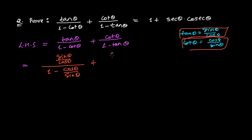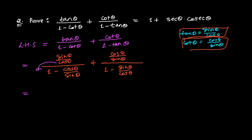Similarly, this cot theta I write as cos theta divided by sine theta, divided by 1 minus tan theta. Tan theta here is sine theta over cos theta. So let's use sine theta over cos theta. And now we can bring the denominators down and do simple calculation.